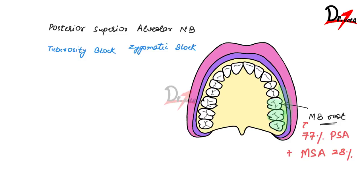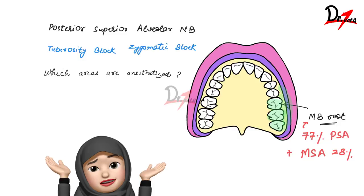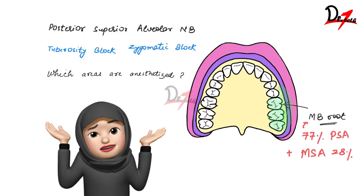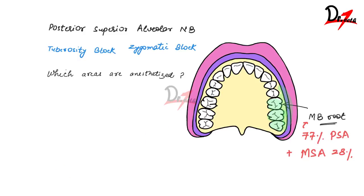This is an important viva question — you can be asked which areas are anesthetized by the PSA nerve block. The answer will be: the maxillary molars, with the exception of the mesiobuccal root of the first molar, and also the buccal alveolar process of the maxillary molars including the overlying structures like the periosteum, connective tissue, and mucous membrane.